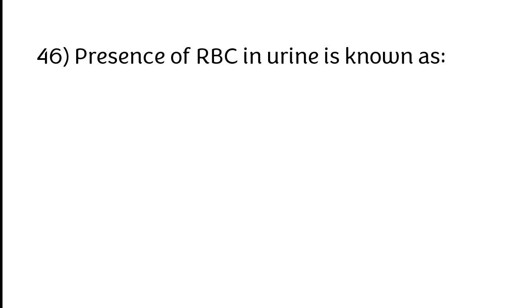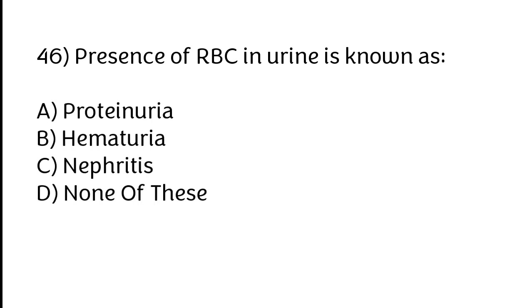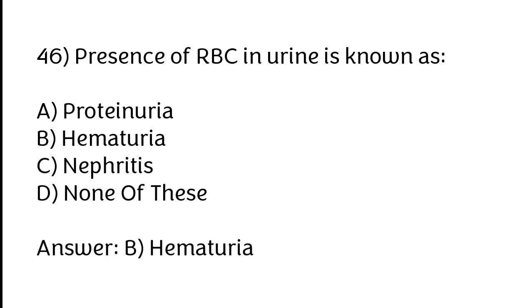Presence of RBC in urine is known as: A) Proteinuria, B) Hematuria, C) Nephritis, D) None of these. The correct answer is option B, hematuria.